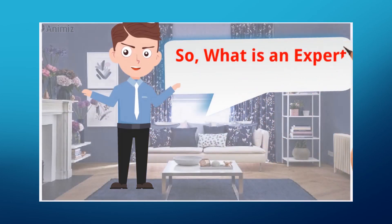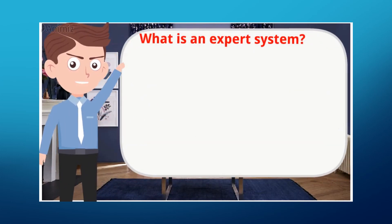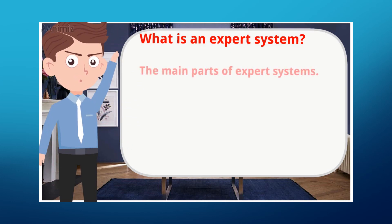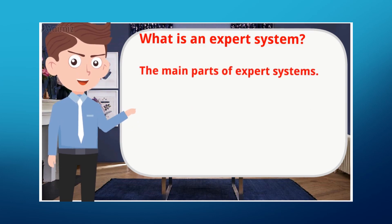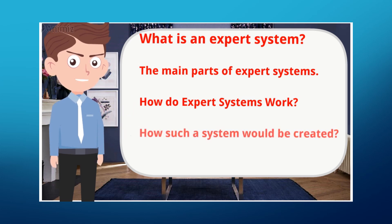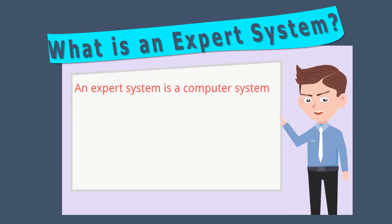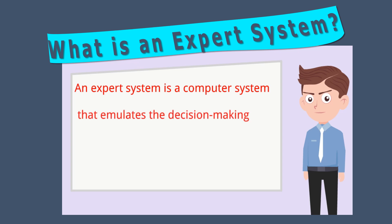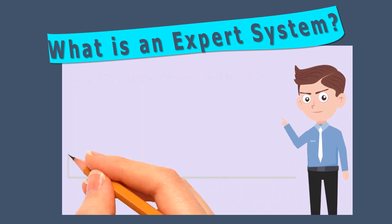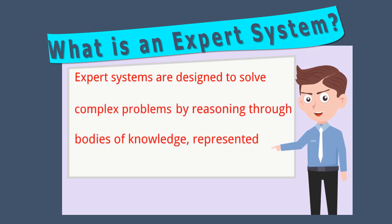What is an expert system? In this video we'll cover the following topics: what is an expert system, the main parts of expert systems, how do expert systems work, how such a system would be created, and some examples of their uses. An expert system is a computer system that emulates the decision-making ability of a human expert. Expert systems are designed to solve complex problems by reasoning through bodies of knowledge represented mainly as if-then rules.